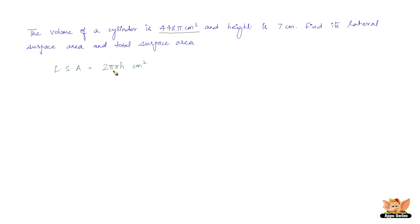Two is a constant, pi is a constant, h is given in the question, but we don't have r. So how do we find r? Use the volume and find r, because volume equals πr²h. Substitute 448π in place of volume and equate it to πr²h — we'll have one unknown, r. Then we can find r and substitute in the lateral surface area formula.